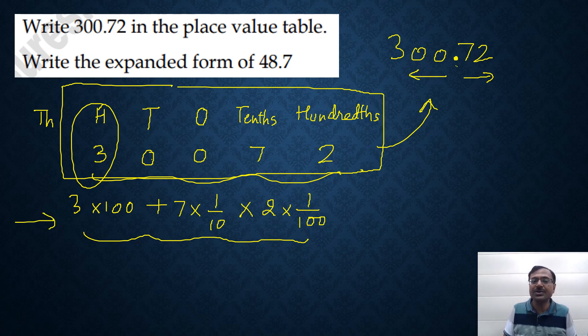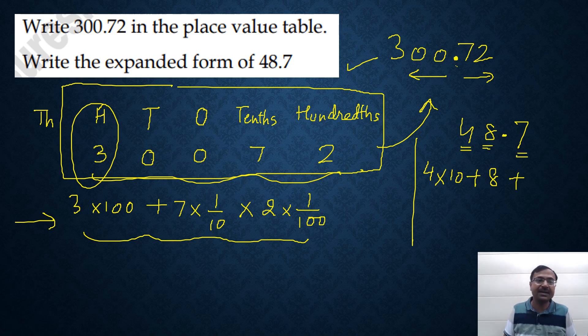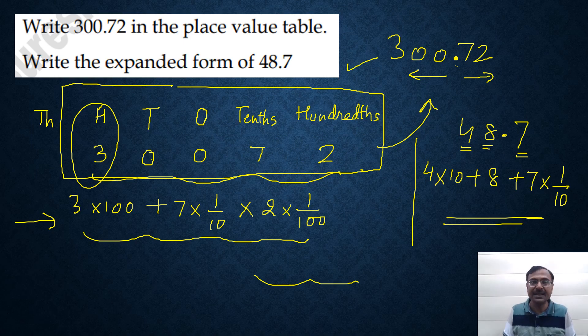I have already expanded this number for you. We have the second question also here, 48.7. If you want to expand that, this 4 is in the tens place, therefore 4 times 10 plus 8 is in the ones place. So, 8 times 1 plus 7. That is after decimal. That is tenths and therefore 7 will get multiplied by 1 tenth. That's the expanded form of 48.7. A very useful concept for all the junior students. They need to understand this and apply this in the practice PDF, the link of which is given below.